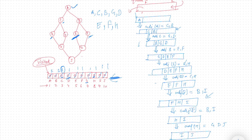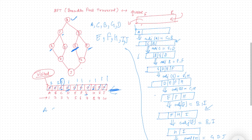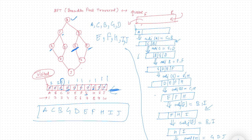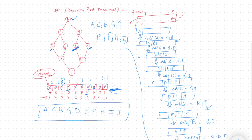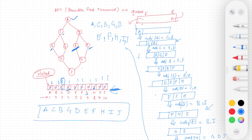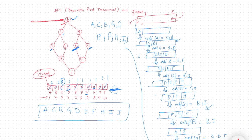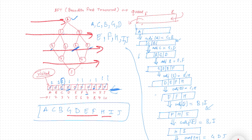The BFT breadth first traversal result is: A, C, B, G, D, E, F, H, I, and J. If you notice, the traversal goes breadth-wise from left to right — A, then C and B, then G, D, E, F, then H, then I and J. That's why it is named breadth first traversal.